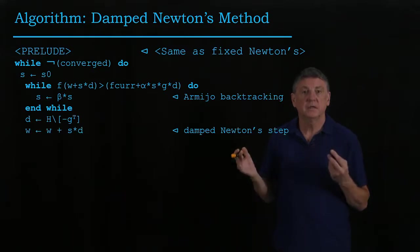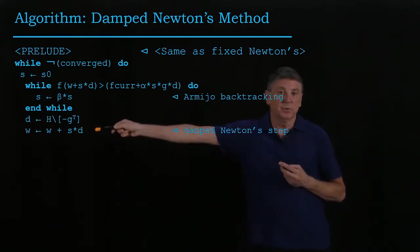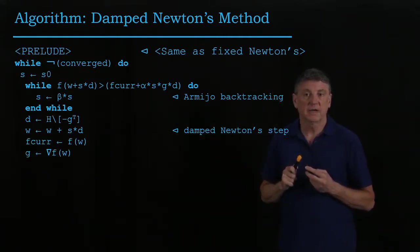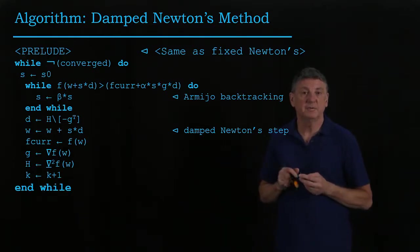We then continue with Newton's method. The difference is that now we're going to employ that backtrack step size in our iteration. And the rest of the code is the same as we had for Newton's method.